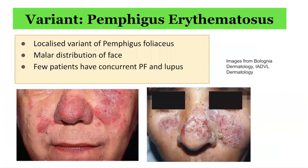There is a variant known as Pemphigus erythematosus. This is a localized variant of Pemphigus foliaceus with malar distribution of the lesions. However, few patients actually have concurrent Pemphigus foliaceus and lupus.